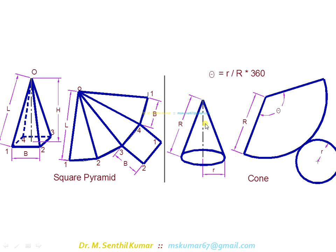For the cone, the vertical height of the solid should not be taken; the generator length capital R should be taken. This capital R is always greater than the axis height. With R as radius, draw an arc, and you have to find the angle of the arc segment such that theta equals small r — the base radius — divided by capital R — the generator length — multiplied by 360. You find the angle using this formula for the cone.